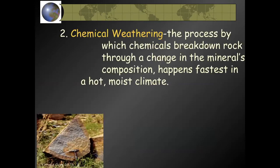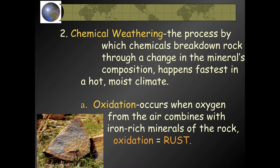Chemical weathering is the process by which chemicals break down rock through a change in the mineral composition. It happens fastest in a hot, moist climate — and we see that in big parts of Texas. For example, if you lay a nail out in the elements, nails contain iron minerals. If it's exposed to a little moisture and oxygen, you'll see that nail turn a rusty color. That is a perfect example of oxidation — chemical weathering occurring when oxygen from the air combines with iron-rich minerals in rock, creating rust.